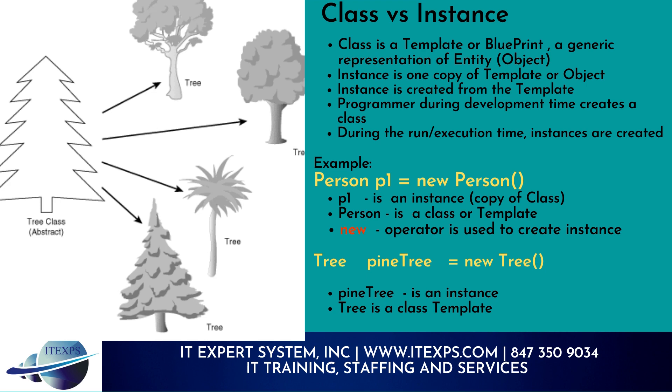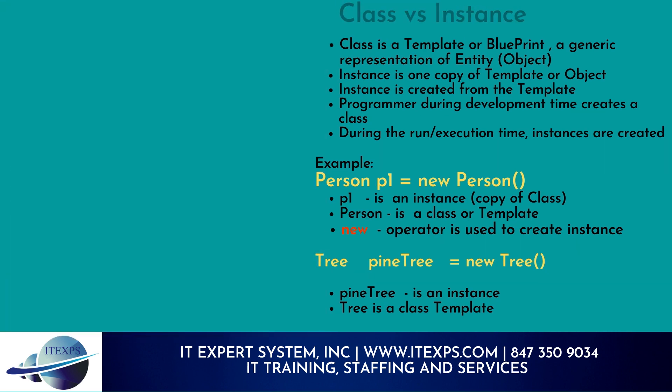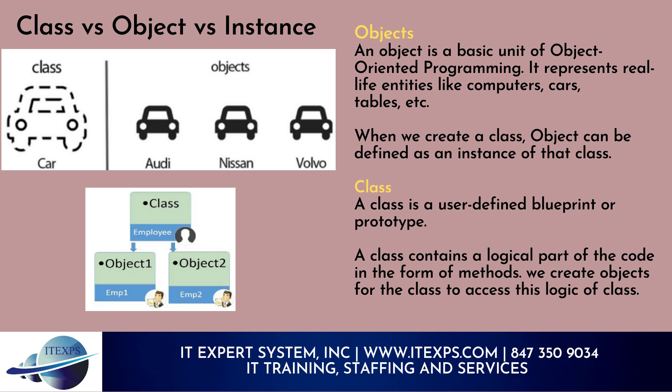Now let's compare class versus object versus instance. An object is a basic unit of object-oriented programming. It represents real-life entities like computers, cars, tables, etc. When we create a class, an object can be defined as an instance of that class. A class is a user-defined blueprint or prototype that contains logic in the form of methods. We create objects for the class to access this logic.